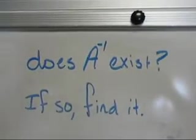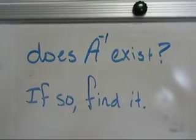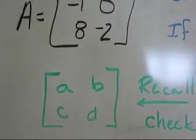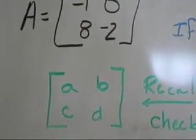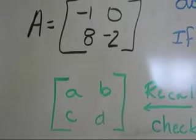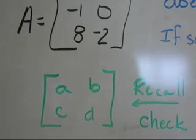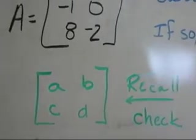The questions are: does A inverse exist, and if it does, we need to find it. The first thing we need to remember is the pattern that our elements are laid out in. Notice where the A, B, C, and D fall. That's very important.